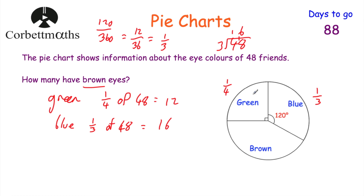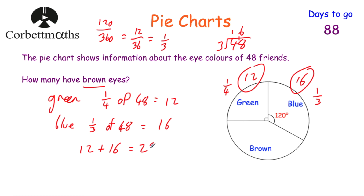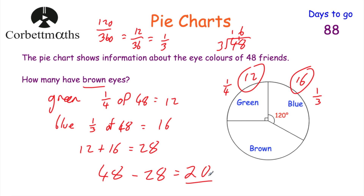The question asked how many have brown eyes — that's the rest. 12 have green eyes, 16 have blue eyes, so 12 + 16 = 28. Then 48 take away 28 equals 20. So 20 of the friends have brown eyes. Hopefully you got that right — well done!